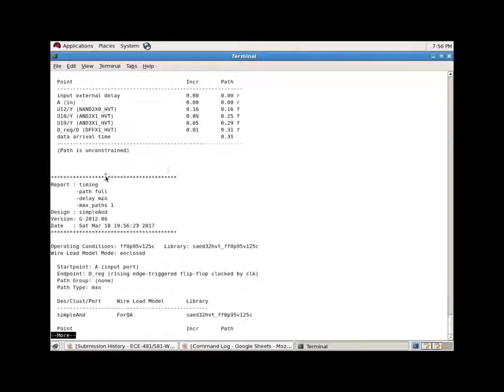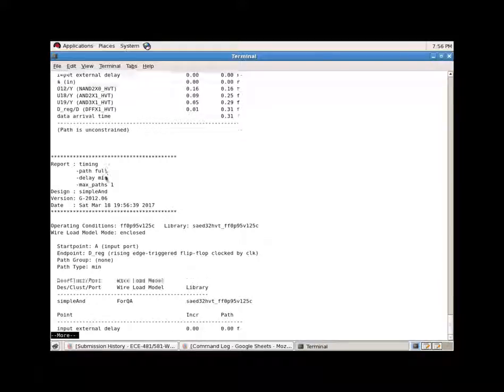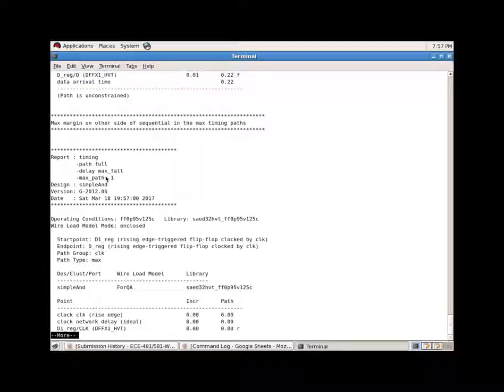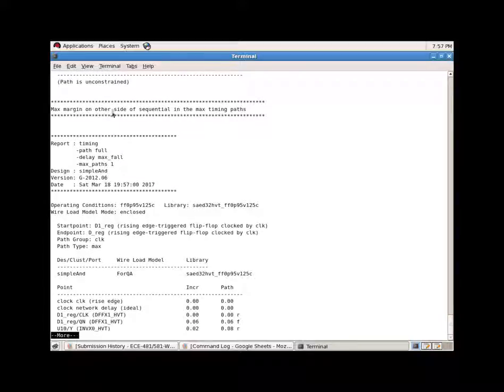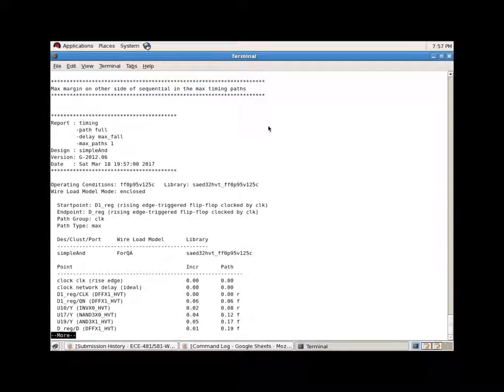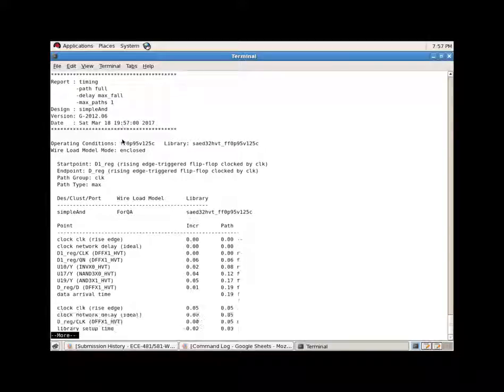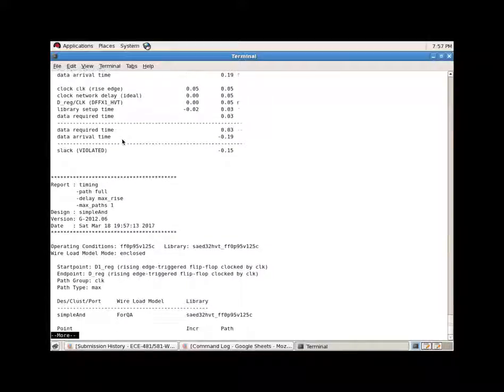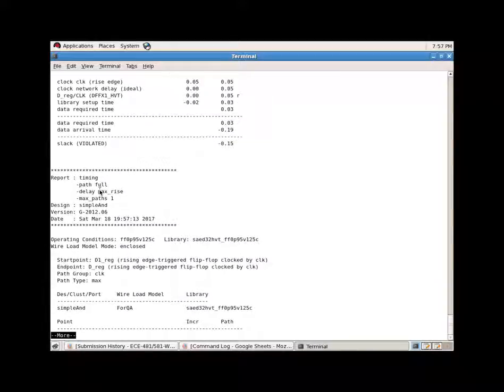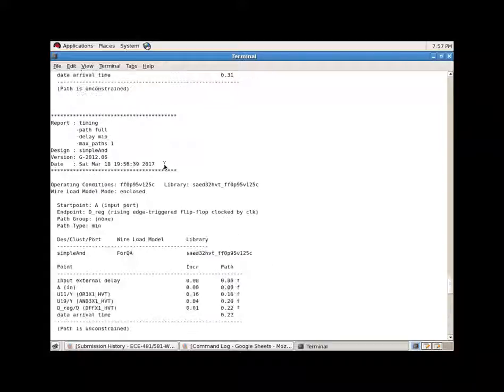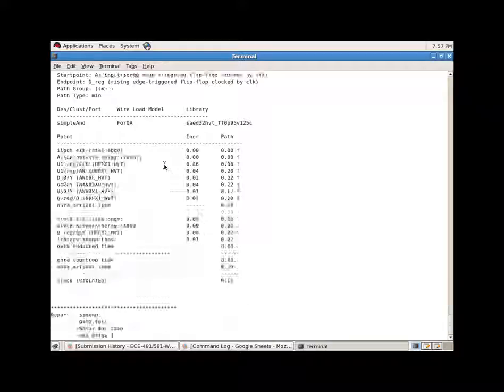Also we show here the maximum margin on the other side of the sequential in the maximum timing paths. That shows both the maximum fall and maximum rise. This one is for maximum fall. Moving down here, this one is for maximum rise. The top one is maximum fall.